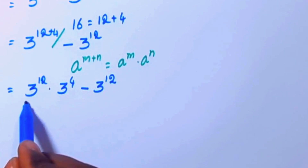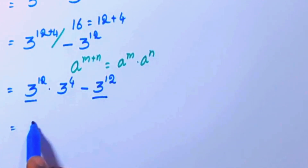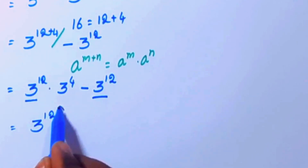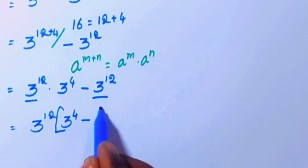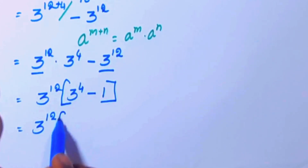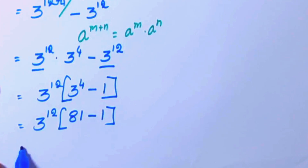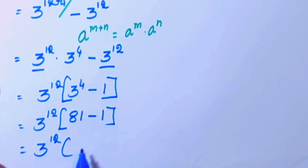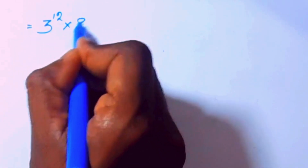Now we can see 3 power 12 is common. Factoring it out, we get 3 power 12 open bracket 3 power 4 minus 1. We know that 3 power 4 is 81, so this becomes 3 power 12 times open bracket 81 minus 1, which is 80. So we get 3 power 12 times 80.